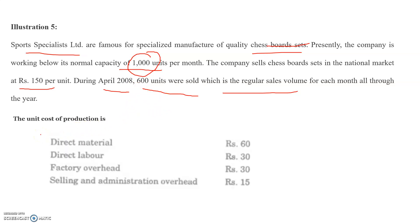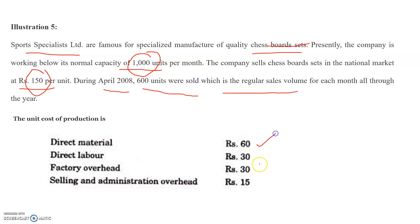The unit cost of production per unit is as follows: Direct material Rs. 60, Direct labor Rs. 30, Factory overhead Rs. 30, and Selling and administration overhead Rs. 15. These are the different components of cost per unit.